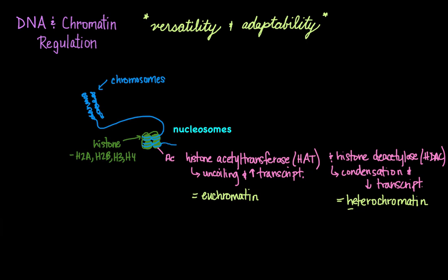Now often, you will see that histone deacetylation is combined with another type of DNA regulatory mechanism, and that is DNA methylation. This occurs in a process called gene silencing, and this is a more permanent method of down-regulating the transcription of genes.